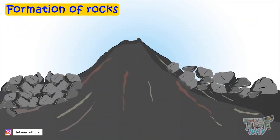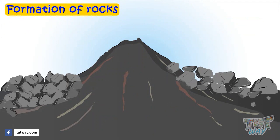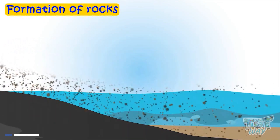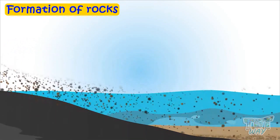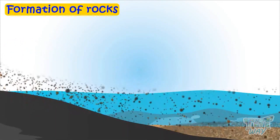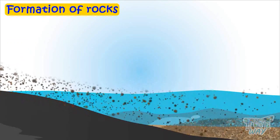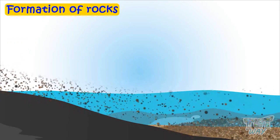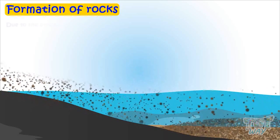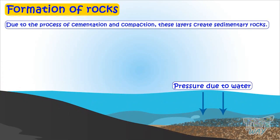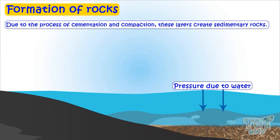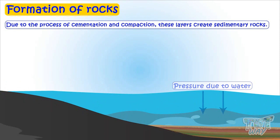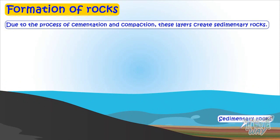The process of weathering breaks all types of rocks and creates small sediments. These sediments are carried away by the process of erosion and form layers on the beds of the rivers. And with the process of sedimentation, these layers create sedimentary rocks.